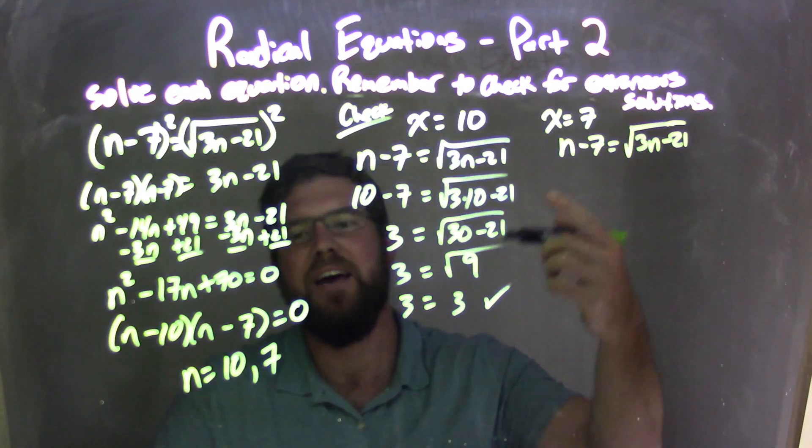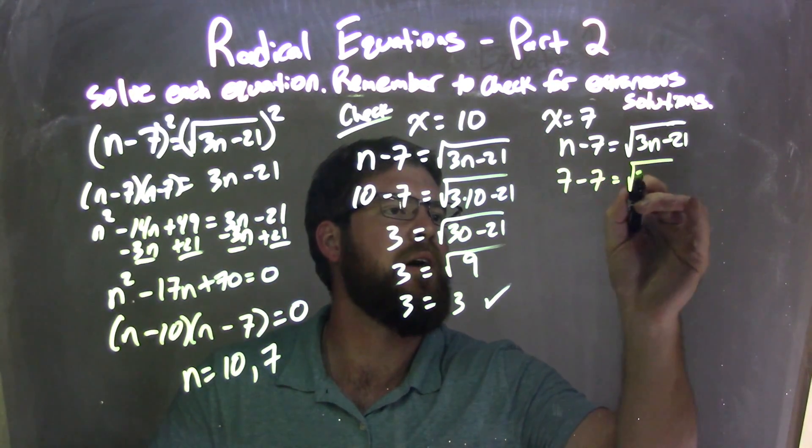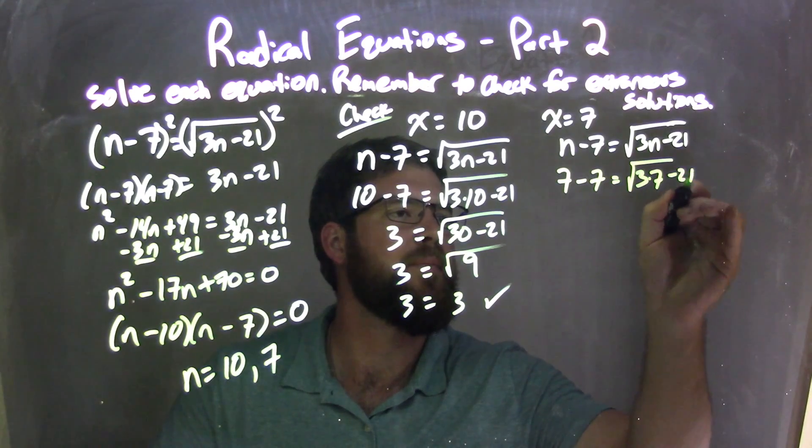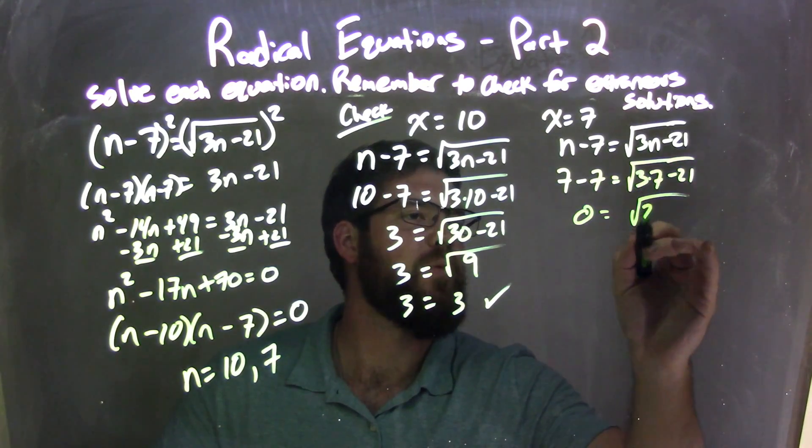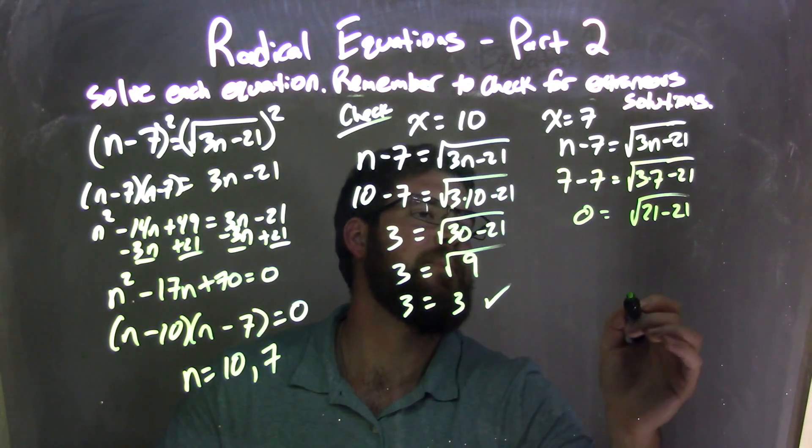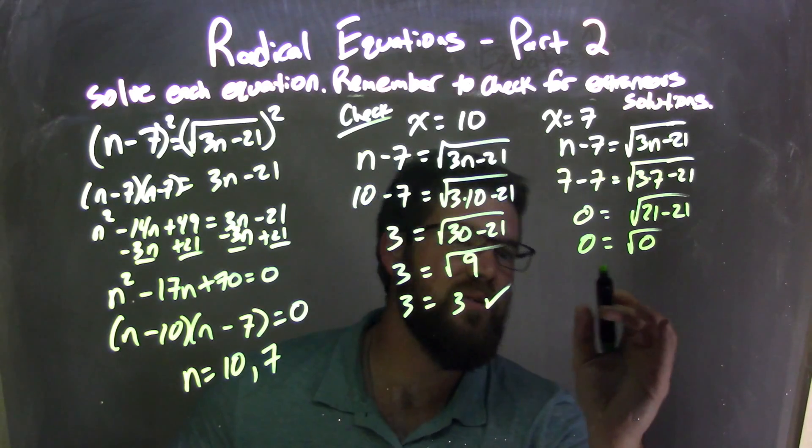From there, I'm going to plug 7 in for my n value. So 7 minus 7 equals square root of 3 times 7 minus 21. 7 minus 7 is 0. 3 times 7 is 21. And we bring in the minus 21. 21 minus 21 is 0.